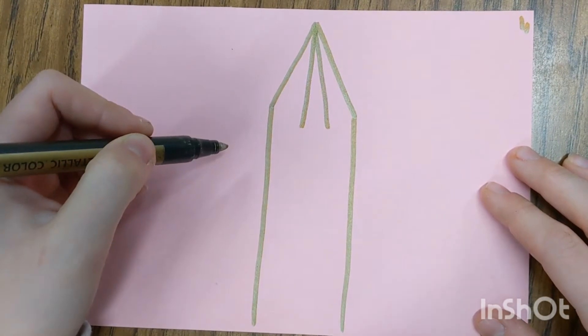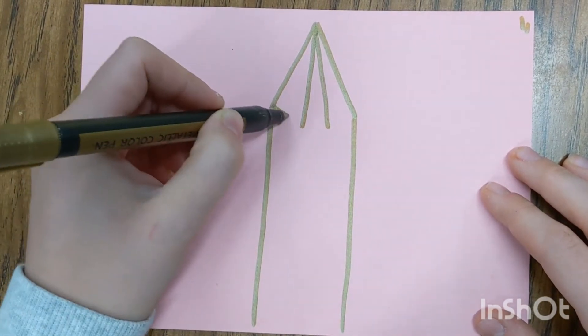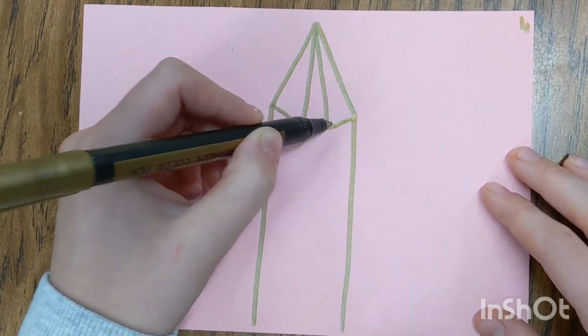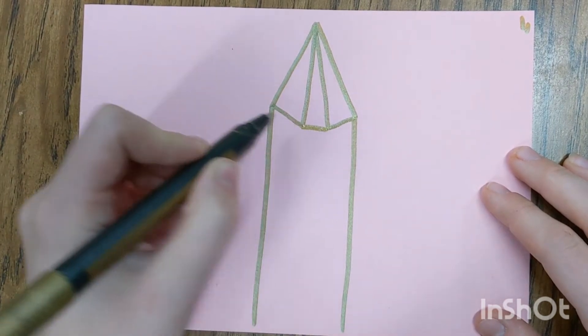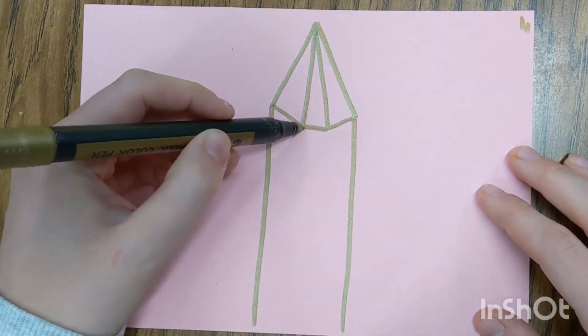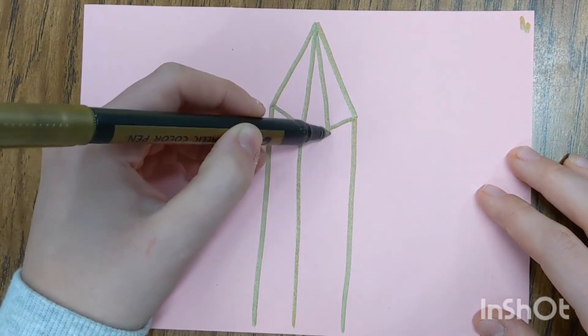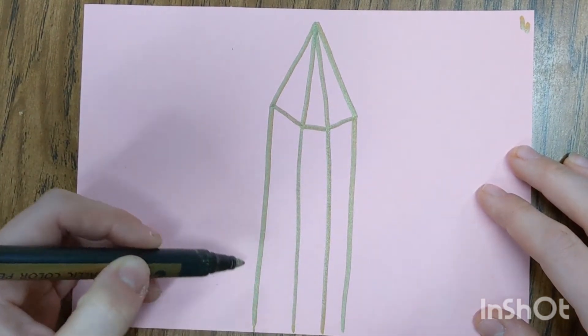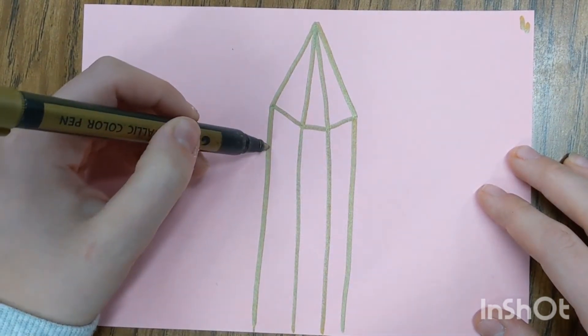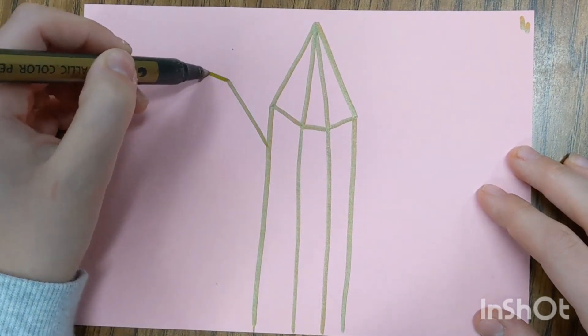Go ahead and draw two vertical lines that go down from the point of our crystal. Then connect those lines together with some smaller lines. Then you'll want to draw two long vertical lines that go down your crystal length. And there you go, that is our first crystal done.